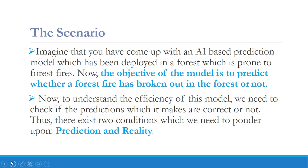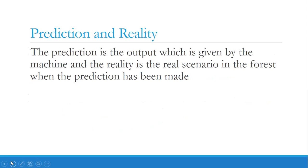To understand the efficiency of this model, we need to check if the predictions it makes are correct or not. Thus there exist two conditions which we need to ponder upon: prediction and reality. Prediction is always the output of our AI model, and reality is the real scenario in the forest when the prediction has been made.